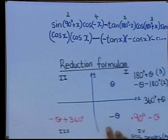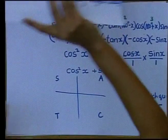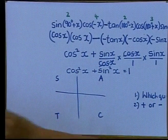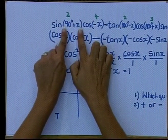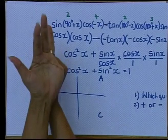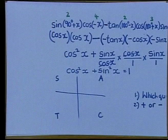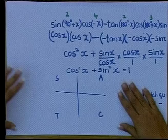Then after that, I said please everybody, look in which quadrant you're working - positive or negative. My name changed for 90 minus and 90 plus. And after that, I went to the identities.